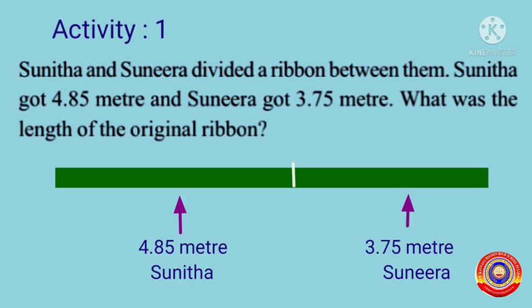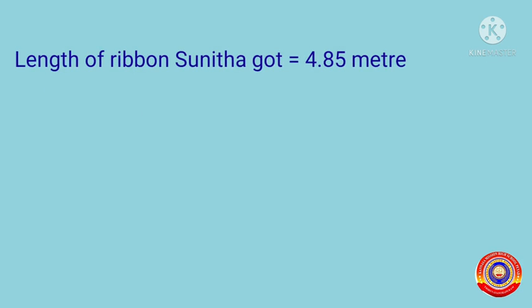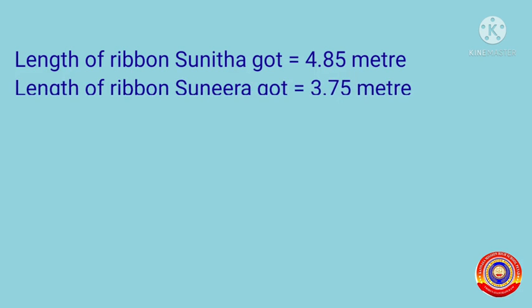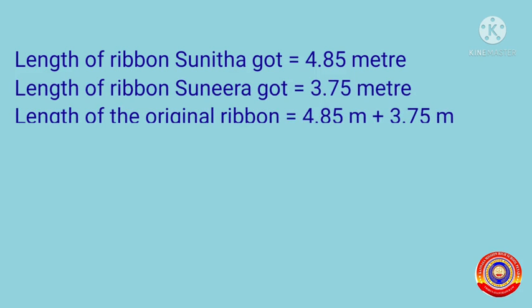We have to find out the length of the original ribbon, that is the total length of this ribbon. The length of ribbon Sunita got is 4.85 meters and the length of ribbon Sunira got is 3.75 meters. Therefore, the length of the original ribbon is equal to 4.85 meters plus 3.75 meters. Addition of decimal numbers is the same as the addition of whole numbers.